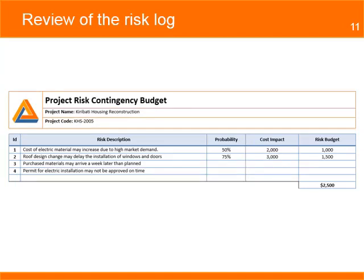Along with the risk log, the project uses a second table to calculate the risk contingency budget — the amount of money it will cost the project if a risk occurs. You decide to include in the agenda for the next project meeting some time to discuss these risks and update them, now that the team has more information and a better understanding of the conditions that can impact the project.